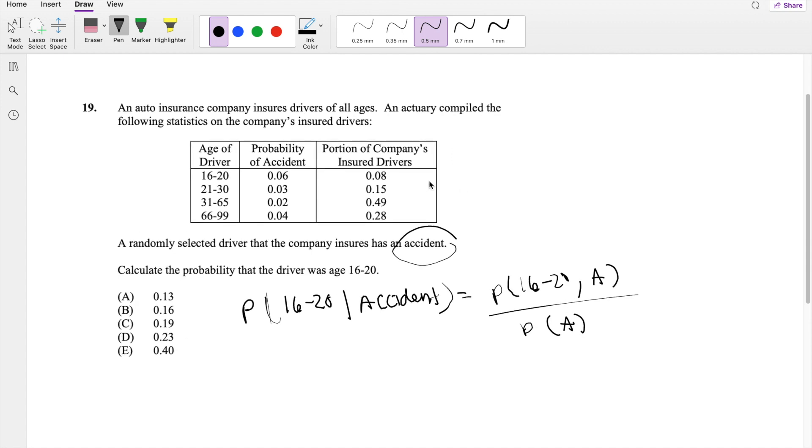So the probability of an accident would just be equal to 0.06 times the portion of the company's insured drivers, 0.06 times 0.08. So this is the probability that people who had an accident is between 16 to 20. And then I can do the same thing for all the age groups, like 0.03 times 0.15, 0.02 times 0.49, and lastly, 0.04 times 0.28.